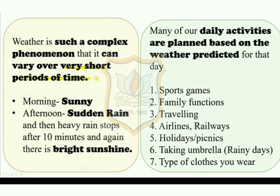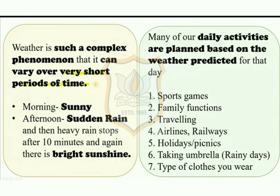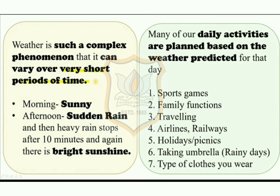Weather is such a complex phenomenon that it can vary over very short periods of time. It can happen sometimes that it is sunny in the morning but suddenly clouds appear from nowhere and it starts raining heavily. Or a heavy rain may vanish in a matter of minutes and give way to bright sunshine. Since weather is such a complex phenomenon, it is not easy to predict.